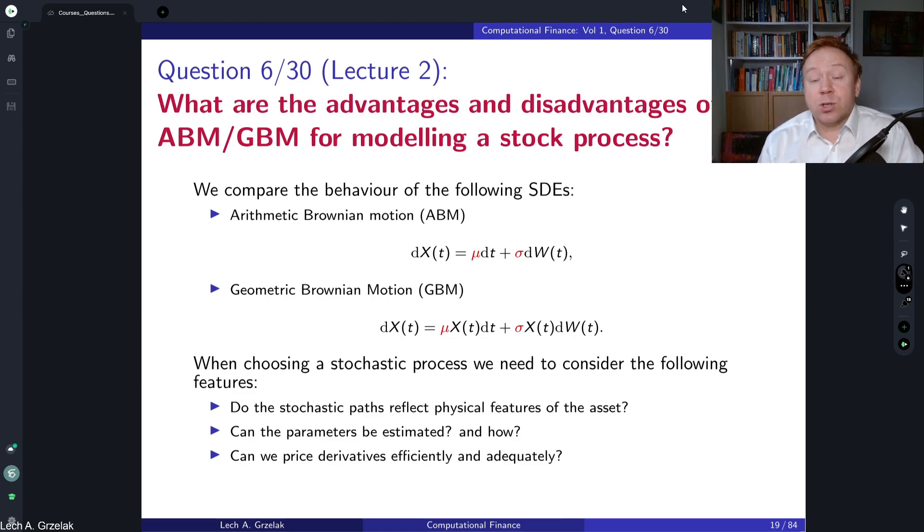So here what are the advantages and disadvantages? Those two models, in particular geometric Brownian motion, have insufficient number of degrees of freedom that we should have to calibrate our model to the market instruments. So those models should not be used for pricing of exotic derivatives.